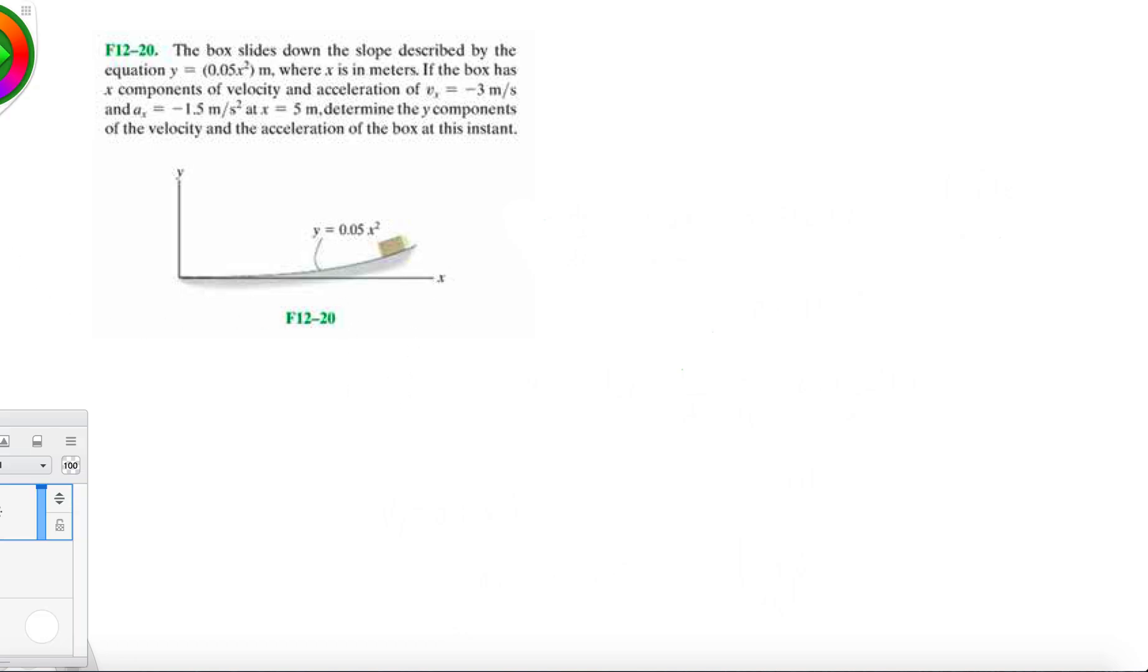So for this problem we're given the y component or the position function of the y direction with respect to x as a function of x. And they tell us that the box has x components of velocity and acceleration of vx = -3 meters per second and ax = -1.5 meters per second squared.